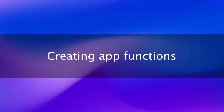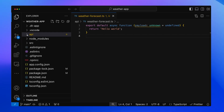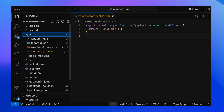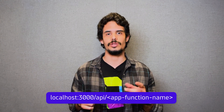That out of the way, let me show you how to create and use App Functions. Creating App Functions is actually very simple. The Dynatrace App Toolkit offers a command to do just that, which you can see on screen right now. Once run, you'll see a new API folder. This folder holds a TypeScript file with the same name as your App Function. You can have as many App Functions as you want in your app, and every one of them is exposed under its own URL.